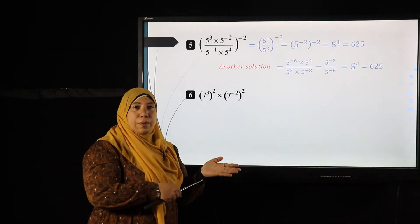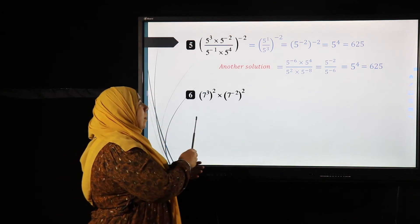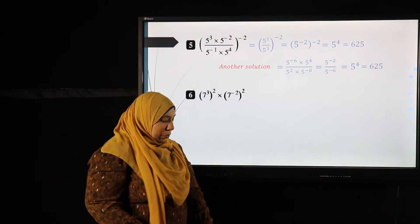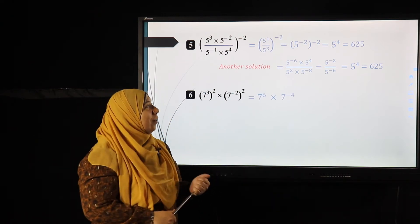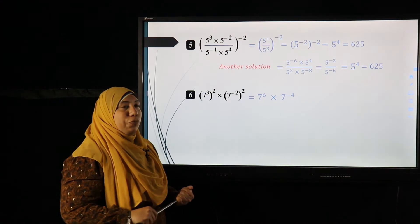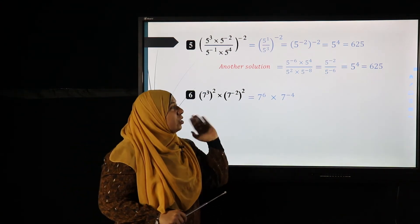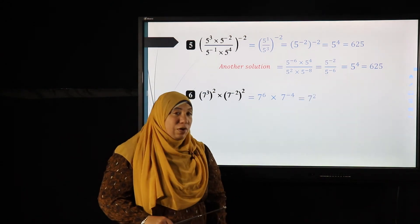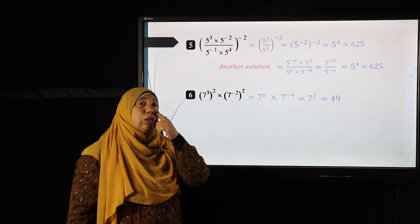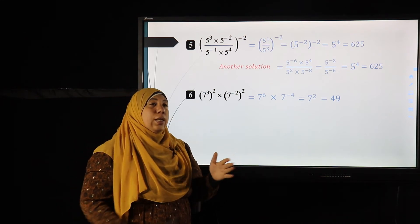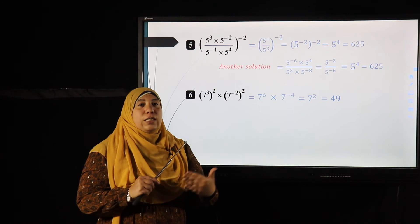Then multiplying and adding powers on top, and subtracting powers on the bottom, gives the same result. Another example: here I must distribute first. Seven cubed to the power two gives seven to the power six; seven to the power negative four to the power two gives seven to the power negative eight. Both bases are seven, so adding powers: seven to the power six plus negative eight equals seven squared, which equals 49.